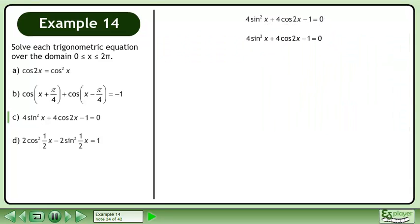Rewrite the original equation. Cos2x is equivalent to 1 minus 2sin²x. Distribute 4 through the brackets. Collect like terms.